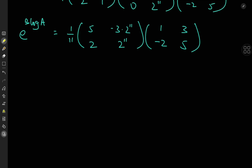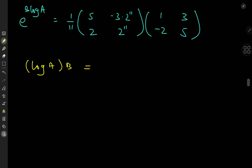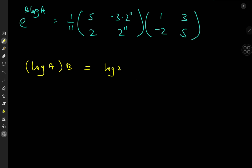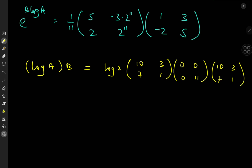That was the first way of raising one matrix to another. Now let's switch to the other definition — e to the log(A) times B — and compute that. Diagonalizing log(A)·B, we get log2 times the matrix [[10,7],[3,1]]·[[0,0],[0,1]] with inverse [[10,3],[7,1]].